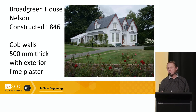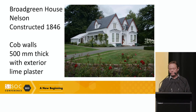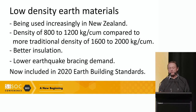In the left-hand photo we have the resultant building — Toto's Café near Totoranui in Golden Bay. Perhaps one of the most notable earth buildings in New Zealand, particularly built in the last century, is Broad Green House near Nelson. Constructed in 1846, it is owned by Nelson City Council and is still in use as a museum. It has Cob walls which are 500 millimetres thick, and on the exterior walls there is lime plaster to protect from the weather. In the last few years there's been increasing use of low-density earth materials with a density of 800 to 1,200 kilograms per cubic metre, compared to the more traditional 1,600 to 2,000 kg/m³ for rammed earth and approximately 1,800 kg/m³ for adobe.